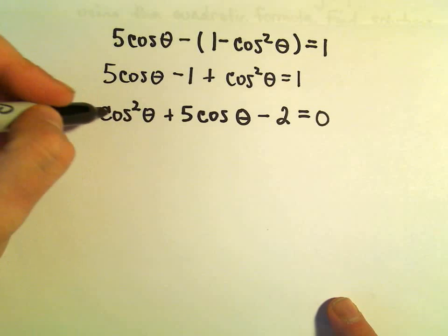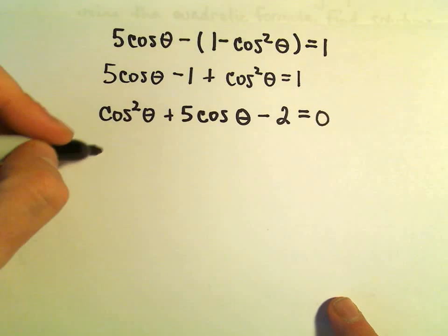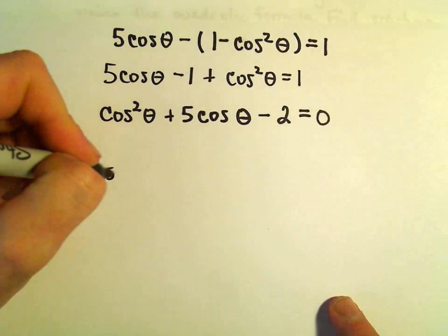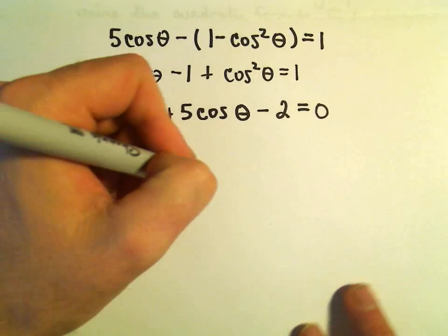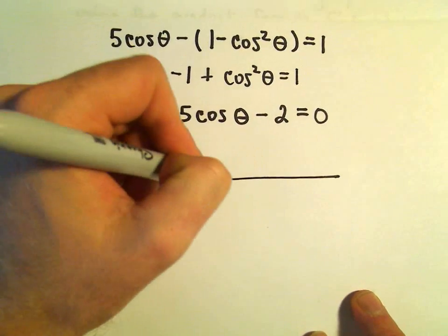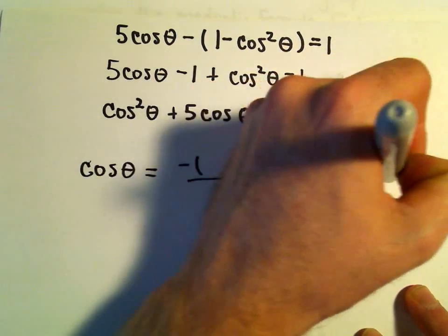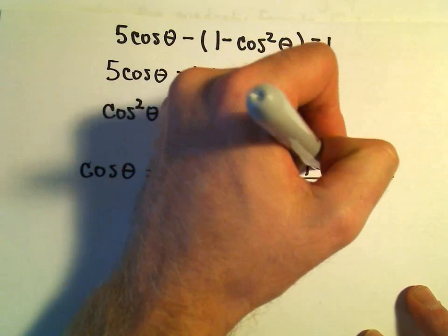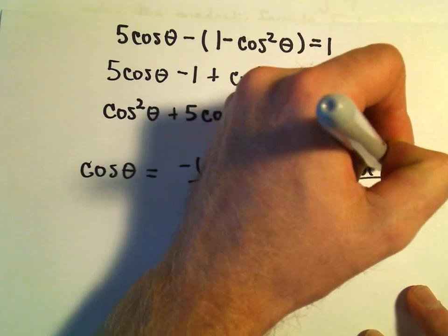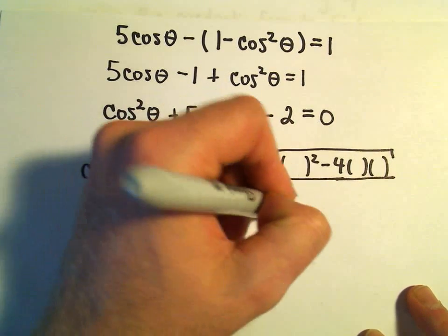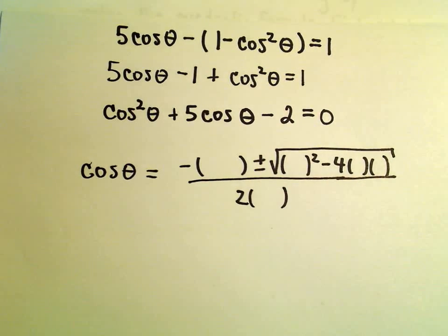Instead of just having x squared, we've got cosine theta squared. So we'll say cosine theta equals negative b plus or minus the square root of b squared minus 4 times a times c all over 2a. We get these values just like normal.